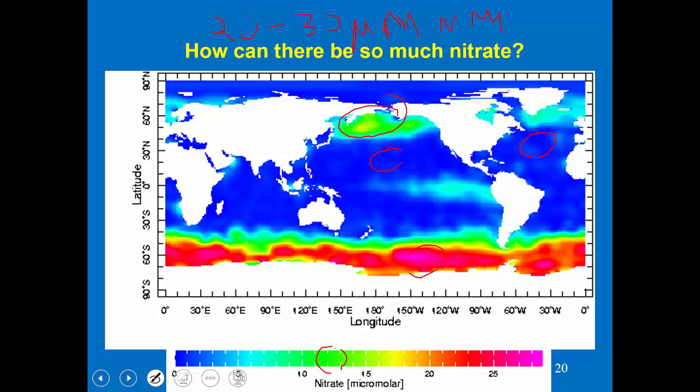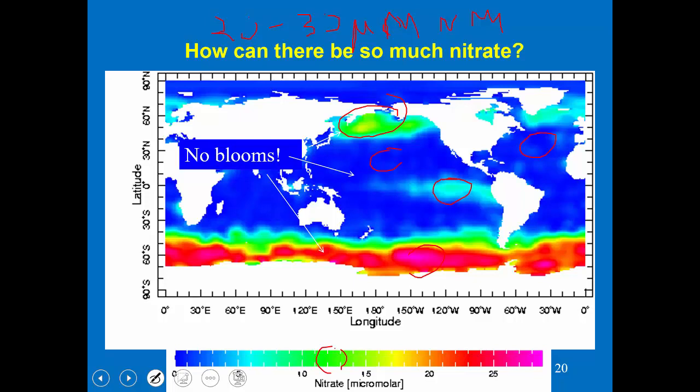We also see high nitrate in the equatorial Pacific. How can there be so much nitrate? You can see really high concentrations of nitrate in estuaries or in winter, and you know what happens — there's a bloom that occurs in spring when the water column stabilizes. But in these HNLC waters, there are never any blooms.